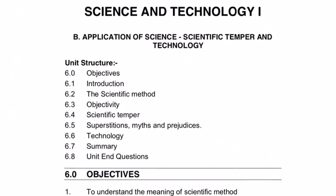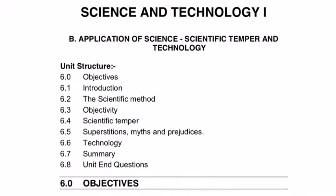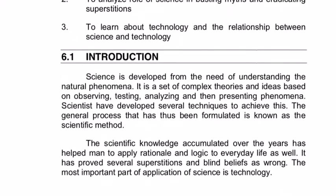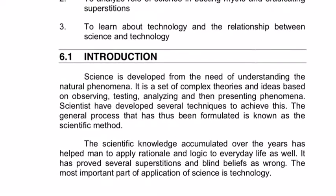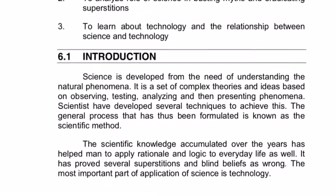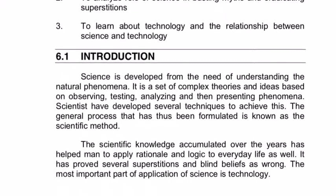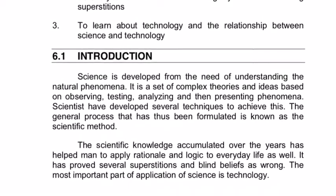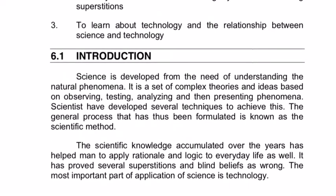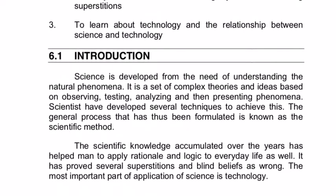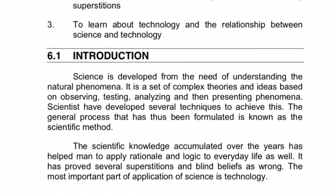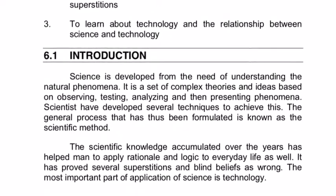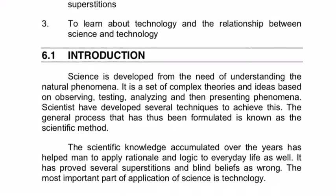Science and Technology Part B: Application of Science, Scientific Temper and Technology. Science is developed from the need of understanding natural phenomena. It is a set of complex theories and ideas based on observing, testing, analyzing and then presenting the phenomena. Scientists have developed several techniques to achieve this. The general process formulated is known as the scientific method. The scientific knowledge accumulated over the years has helped man to apply rationale and logic to everyday life, proved several superstitions and blind beliefs as wrong. The most important part of application of science is technology.